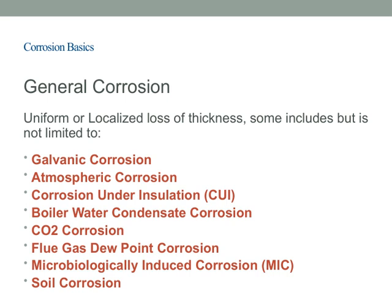Boiler water condensate corrosion happens when condensate forms inside boilers, leading to corrosion of internal surfaces. CO2 corrosion is particularly relevant in pipelines and systems where carbon dioxide dissolves in water, creating acidic conditions that accelerate rust. Flue gas dew point corrosion occurs when flue gases cool and condense, leading to corrosive attacks on boiler or chimney components. Microbiologically induced corrosion, or MIC, involves bacteria that produce corrosive byproducts, significantly impacting pipelines and tanks. And finally, soil corrosion refers to the deterioration of buried structures due to contact with soil, moisture, and microorganisms.